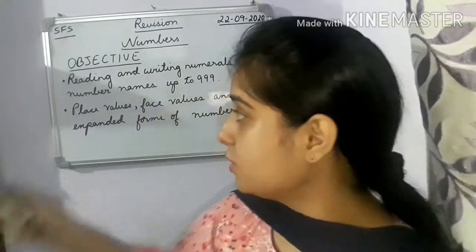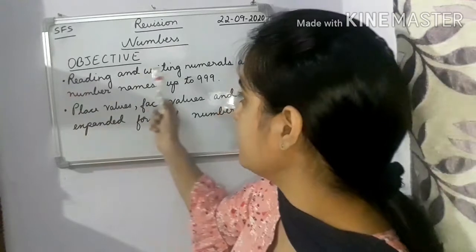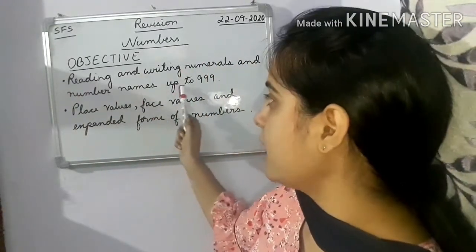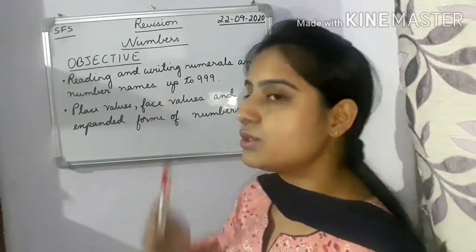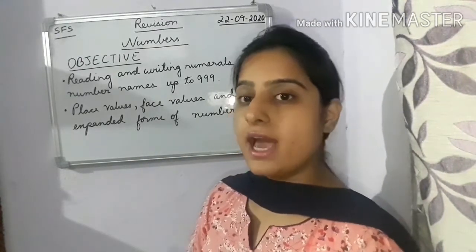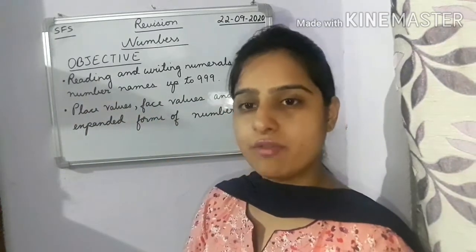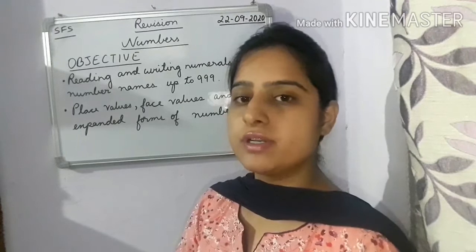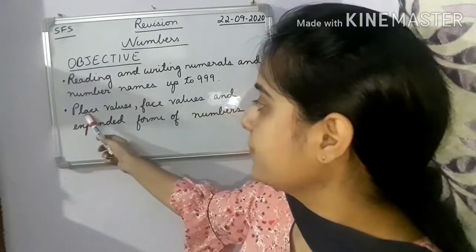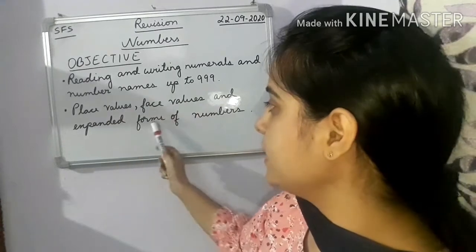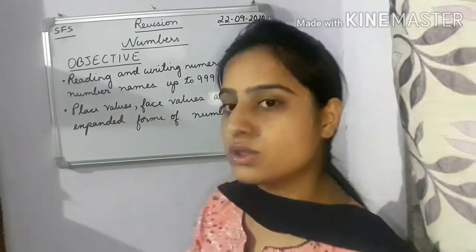Today we are going to do revision of two topics: reading and writing numerals and number names up to 999 — how to read, write numerals and number names up to 999, which we have already done. Next, place values, face values, and expanded forms of numbers. So everyone take out your maths copy, draw a margin, write today's date, write 'revision', and let's start the class.